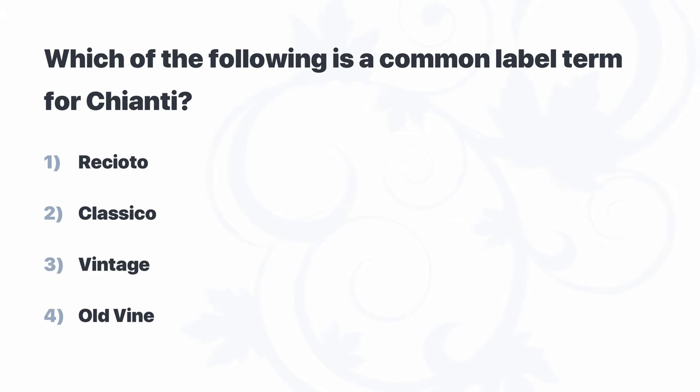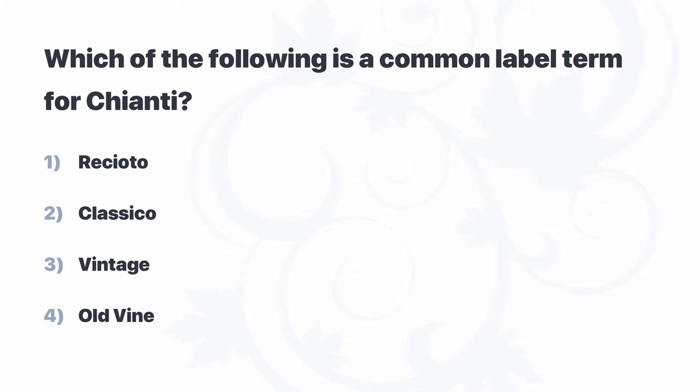Which of the following is a common label term for Chianti? Ricciotto, Classico, Vintage, Old Vine? With a lot of these questions, you can quickly narrow it down to just two answers. In this case, where the question asks about Chianti, we can quickly set aside Vintage and Old Vine and focus on the two Italian terms: Ricciotto and Classico.